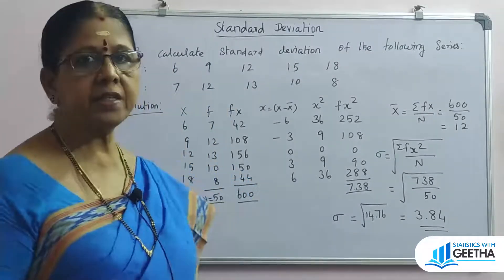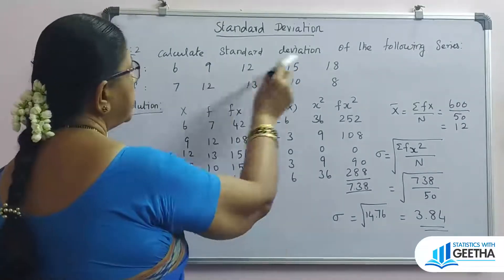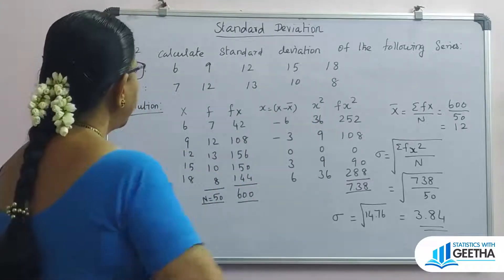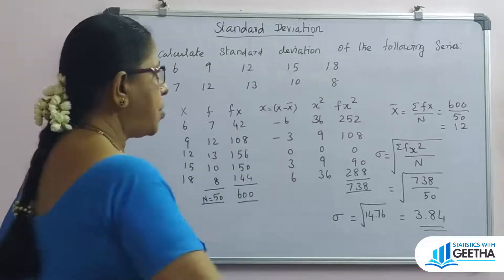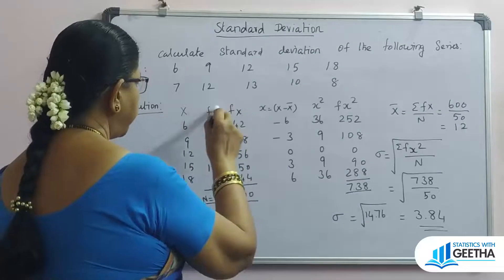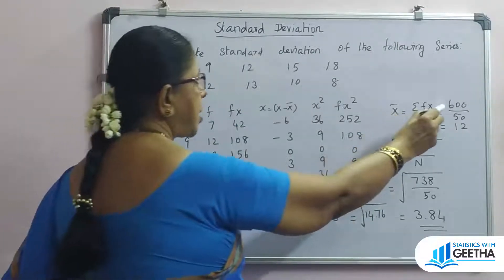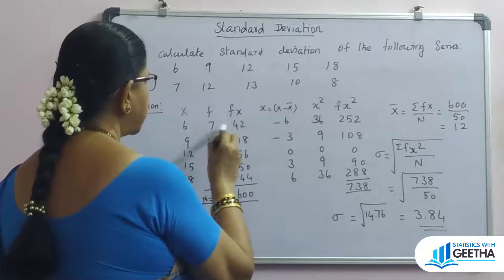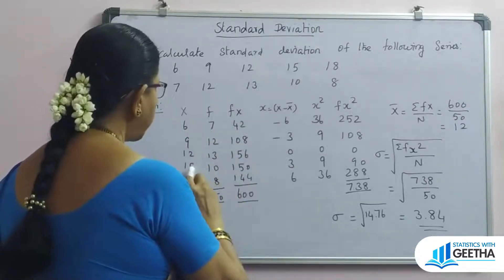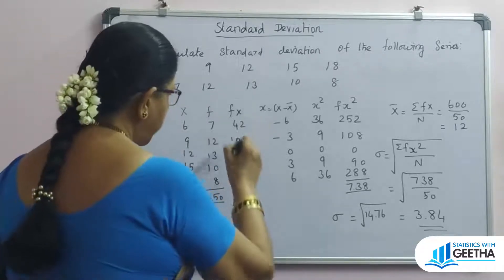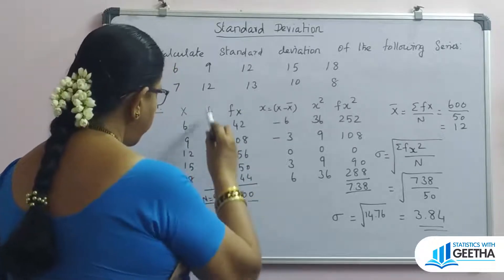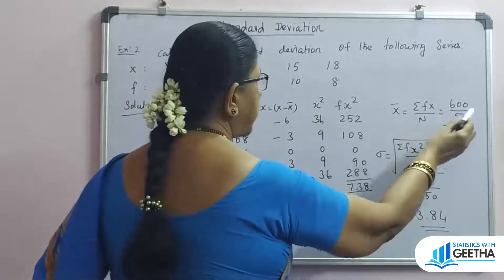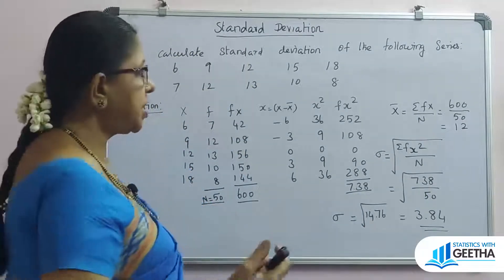Next exercise: discrete series — calculate standard deviation of the following series. You are given x and f values. Form a table with columns x, f, and fx. Since x-bar equals summation fx divided by N, compute fx: 6×7=42, 9×12=108, 12×13=156, 15×10=150, 18×8=144. Summation fx equals 600, N equals summation f equals 50, so x-bar equals 600 divided by 50 which equals 12.